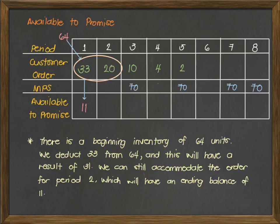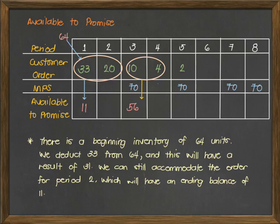For week 3, we have 10 customer orders and there is a master production schedule at that specific time. Looking at week 4, there is also a customer order of 4 units. Since the MPS is obviously larger than the customer order, we can still accommodate those 4 units. You want to maximize the MPS value, so the adjacent week with an MPS can cover the next period's orders, and the excess is your available to promise. So 70 minus 10 and 4 gives us an available of 56 units. Week 5 has its own MPS, so we do not include the 2 units from week 5 in the subtraction for week 3 and 4.